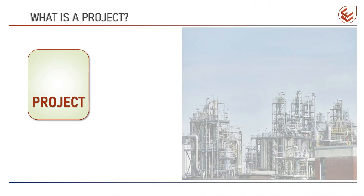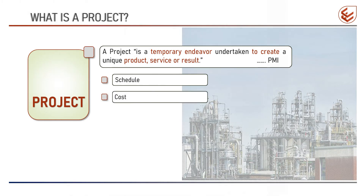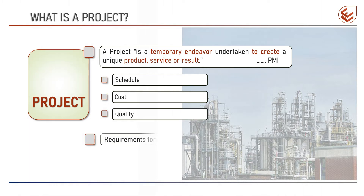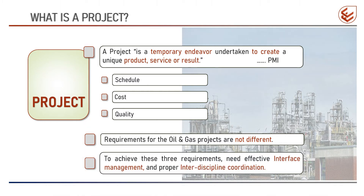Let's start and see what is a project. As defined by PMI, a project is a temporary endeavor undertaken to create a unique product, result, or service. Every project has minimum three requirements: it should finish within a given schedule, within an approved budget, and with good quality. The requirements of an oil and gas project are not different, but it is quite difficult to achieve these requirements without effective interface management and proper interdisciplinary coordination.